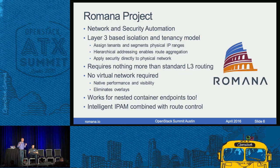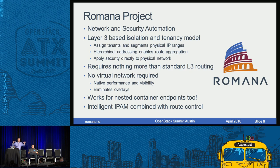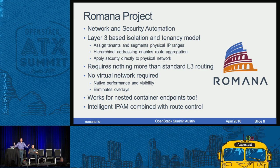Romana is a network automation and security solution enabling a pure layer 3 based approach to networking for virtual machines and containers. It captures a tenancy model, an isolation model, and a network policy enforcement model — all at layer 3. It lets you take advantage of familiar hierarchical routed access designs, working seamlessly with Spine-Leaf data center network designs. Romana assigns IP addresses, configures routes so everything is reachable, and applies security policies to maintain isolation and segmentation at layer 3.